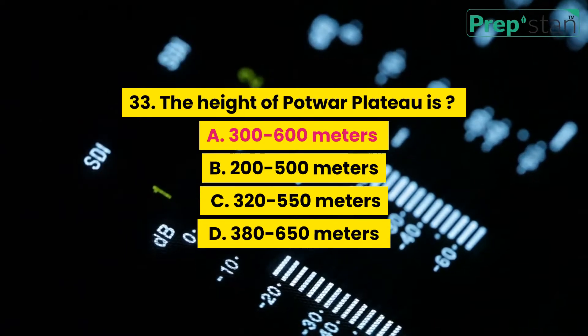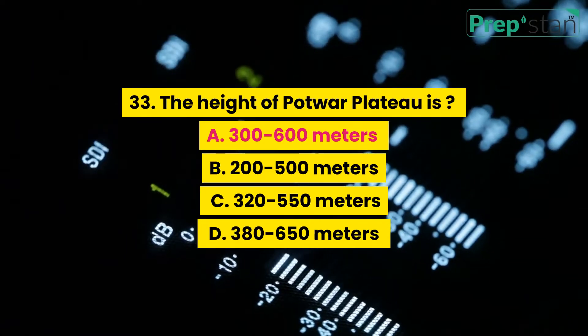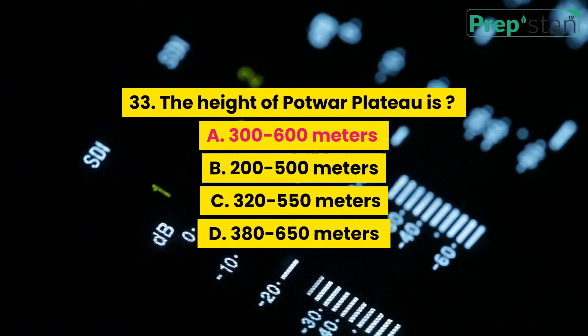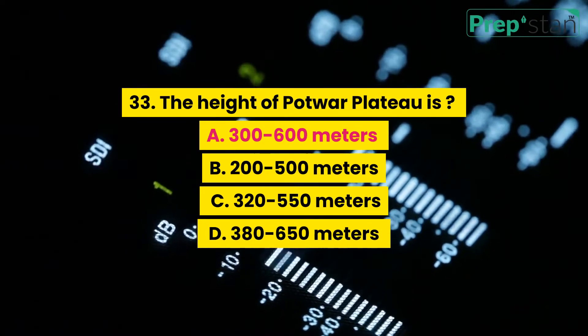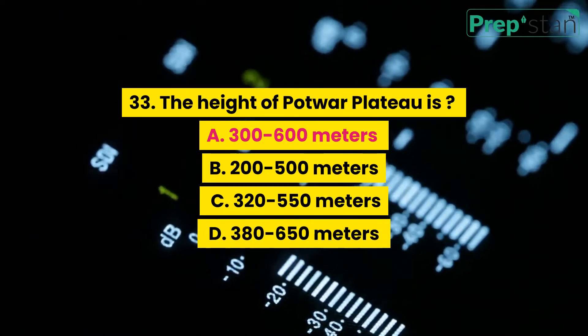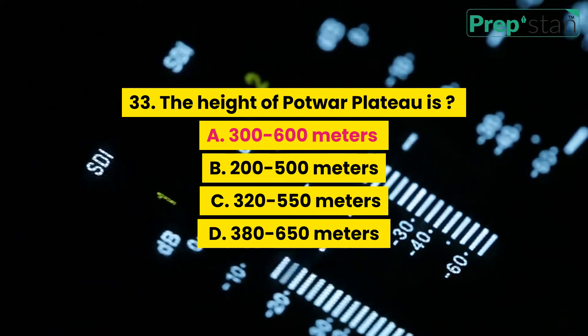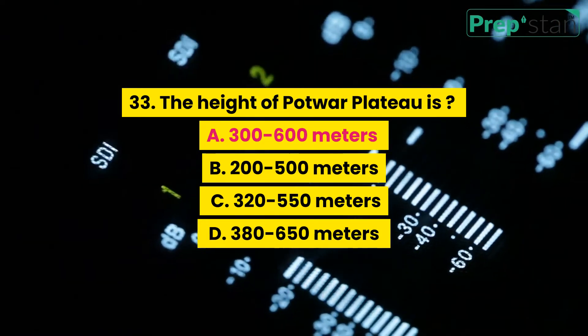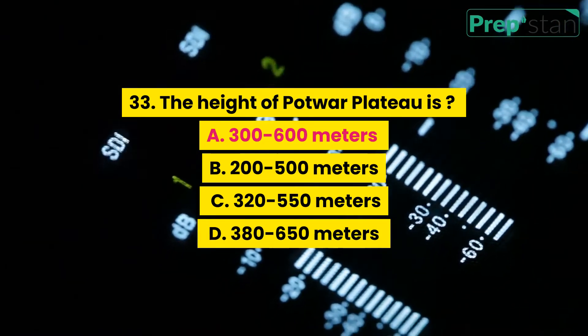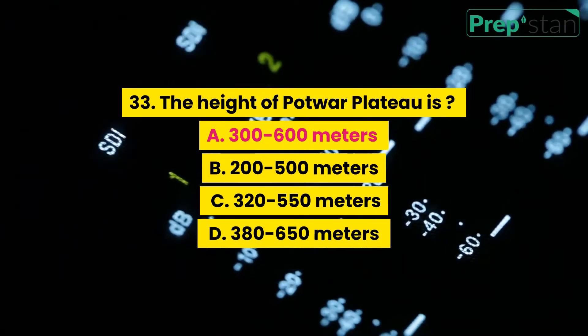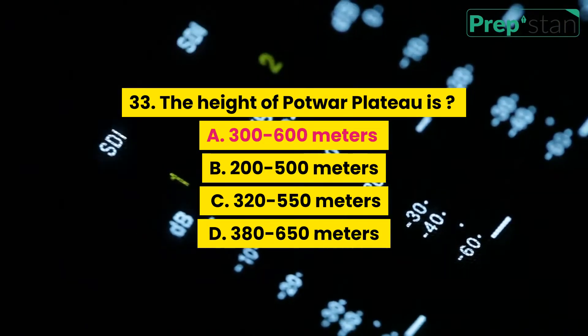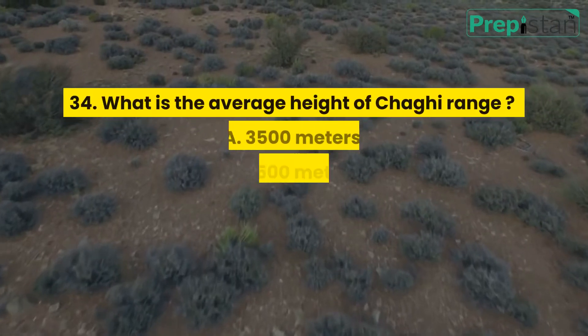Question 33: The height of Potwar Plateau is: A. 300 to 600 meters, B. 200 to 500 meters, C. 320 to 550 meters, D. 380 to 650 meters.